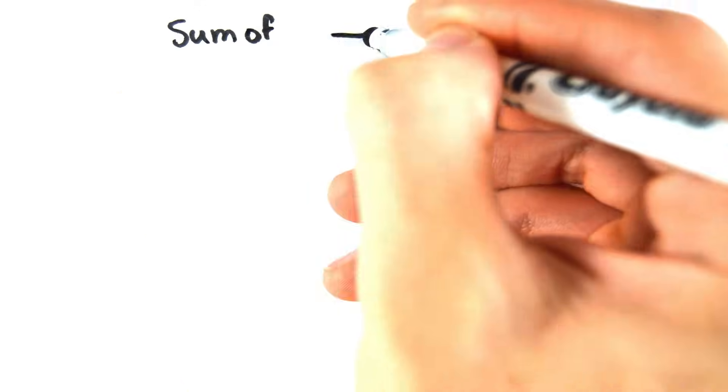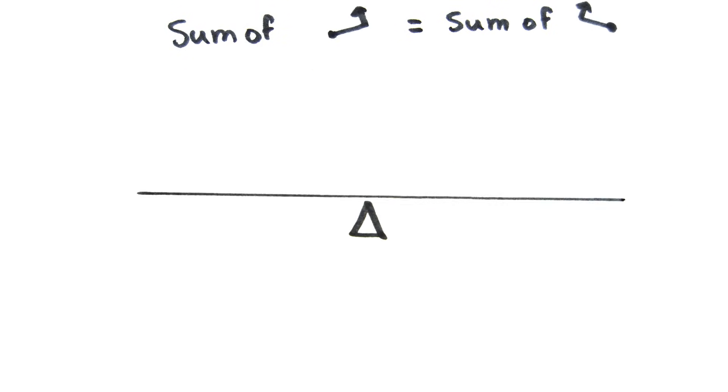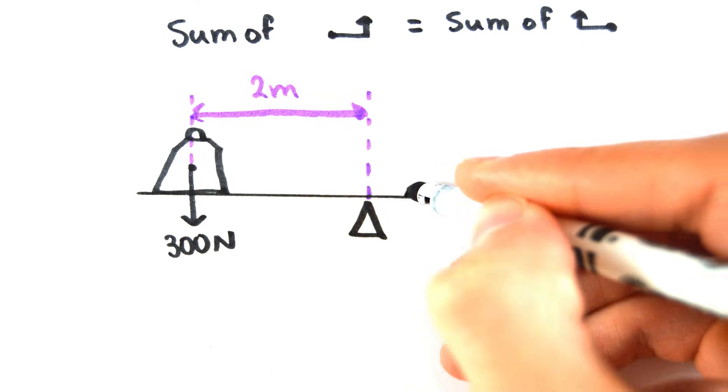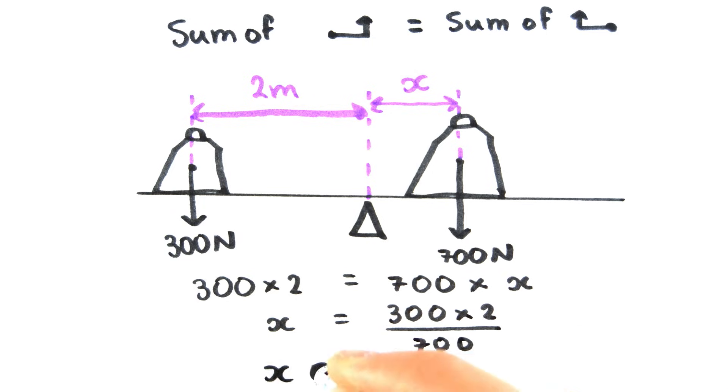An object is balanced when the sum of the anti-clockwise moments about a pivot are equal to the sum of the clockwise moments about the same pivot. For example, if a force of 300 newtons is applied 2 meters from the pivot, and another force of 700 newtons is applied on the other side of the pivot, then it must be applied at 0.86 meters from the pivot in order for the moments to balance.